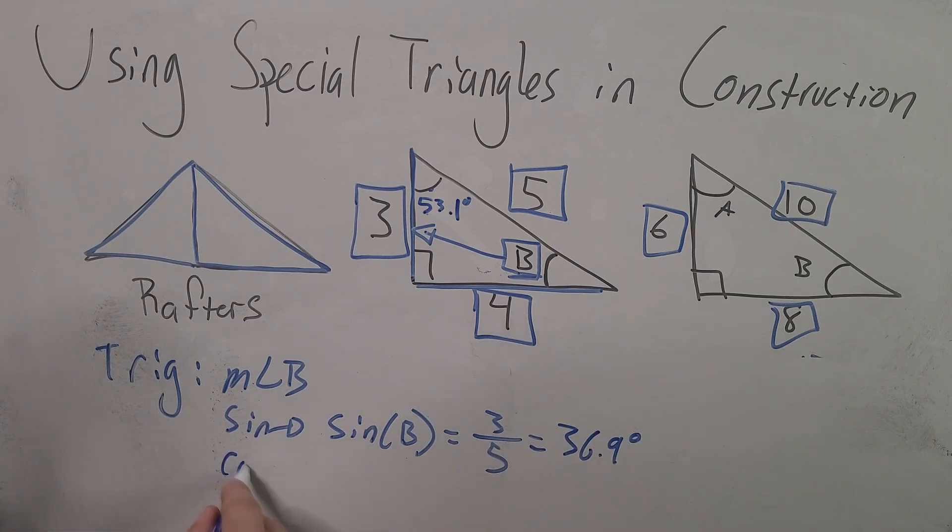Okay so for this angle it's three fifths and that's going to be approximately 36.9. Now for cosine we have cosine of B equals the adjacent over hypotenuse. That's four over five giving you the same number. Just so you can see it with the tangent trig function, tangent of B would be three fourths. So B would be the inverse tangent of three fourths. Okay so it's the same process here.